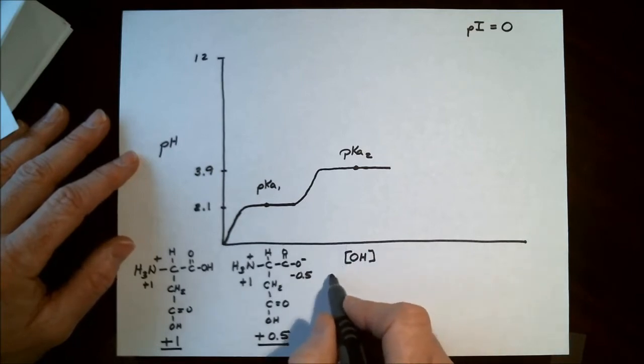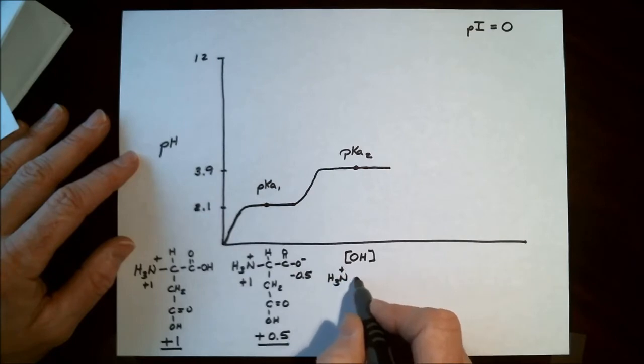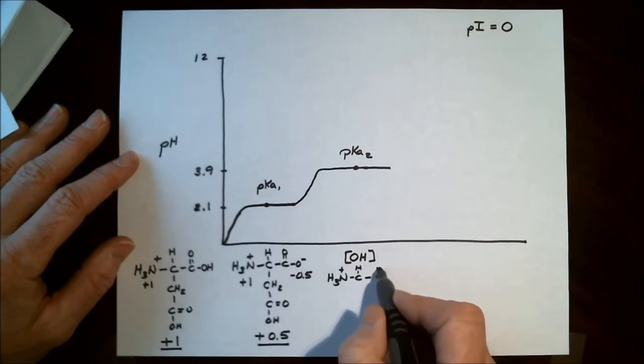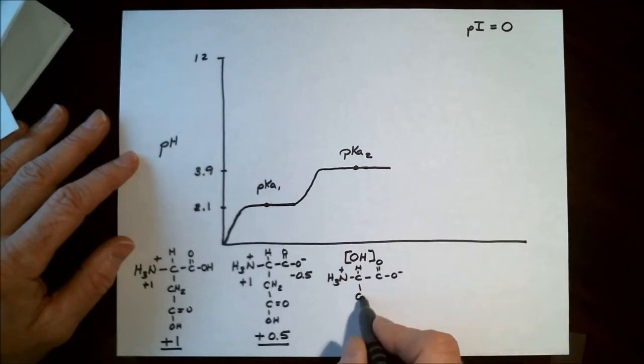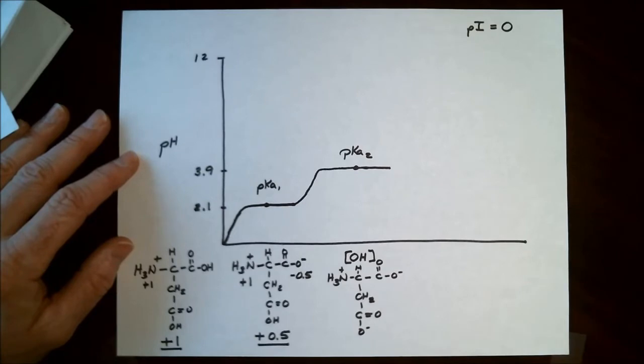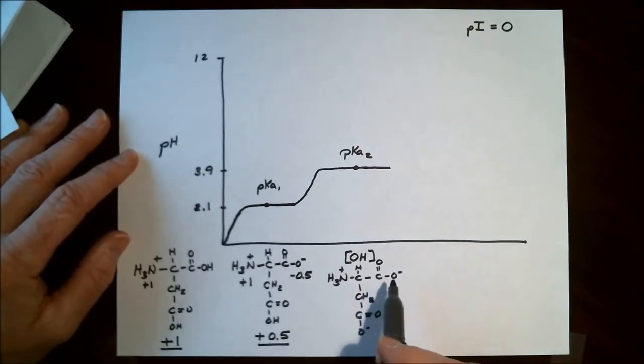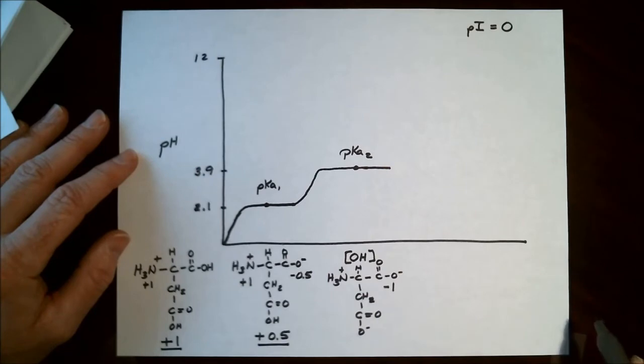Now at this particular pH, let's see what the structure of aspartic acid will look like. So at the second pKa, we can pretty much assume that the carboxylic acid that's attached to the alpha carbon is now almost fully deprotonated. So this is going to contribute a charge of minus 1. The R chain carboxylic acid is now the pKa2, and so this is 50% deprotonated, which means of all the molecules in solution, 50% will be deprotonated and contribute a minus 0.5 charge.